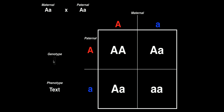Typically we start with homozygous dominant. How many are there? Only one with big A, big A. Then the heterozygotes — how many? Two with big A, little a, one in cell two and one in cell three. And then homozygous recessives — little a, little a — just one. So our genotypic ratio is one to two to one: one homozygous dominant, two heterozygous, and one homozygous recessive offspring.